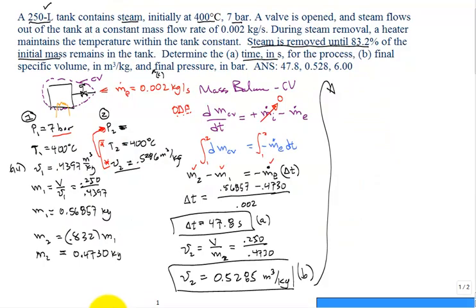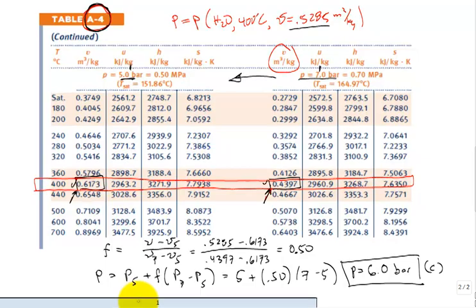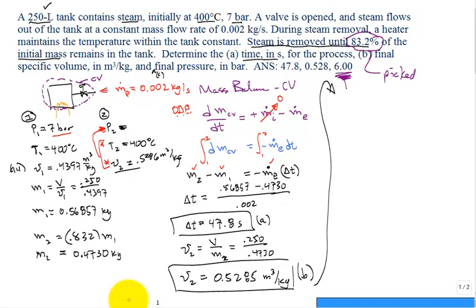So when we come back to this problem, this value right here was picked, selected so that you got a final answer for part C that was a nice even pressure in bar. But it wouldn't have to be. Let's say this was not 83%, but 80%. Well, if it was 80% remaining, that would be less mass remaining. It would be a larger V sub two. Since it's a larger V sub two, it would be a lower pressure, be closer to five bar. So you can play those types of games as you explore the answer to this problem. But with that, we're done with this problem. And hopefully you found it helpful.